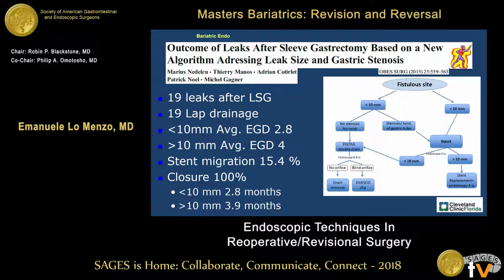For leaks less than 10 millimeters with no stenosis, probably a pigtail — which we'll discuss shortly — to drain internally the leak first, and then reassess endoscopically. If there's a twist, put a stent to dilate the distal obstruction and then reassess. If the leak is still large, another stent. If the leak has shrunk in the meantime, go back and put a pigtail in order to close the leak.